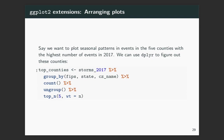First we need to pull out the top counties. I've taken the storms data, grouped them by FIPS, state, and CZ name — keeping that information so we can create the labels we want later. Then I count, ungroup, and use the top_n function from dplyr to pick out the top five counties. With the weight argument we specify which column to use to determine the top five — here I've used n, the count column from after counting, meaning pick the top five in terms of number of events in the county.